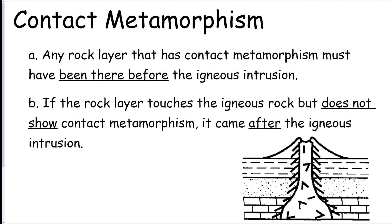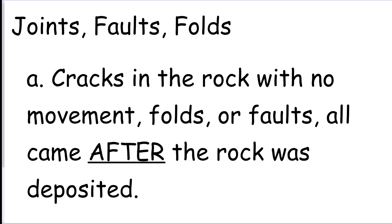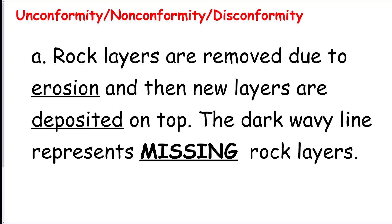For rock correlation, contact metamorphism means the layers behind the intrusion were already there first — the intrusion came after. Faults and folding also happen after the rocks were already there, because all rocks form in flat layers first. An unconformity means a rock layer was removed from the area by erosion — it got washed or blown away — and then more rock was deposited on top. We call an unconformity a buried erosional surface.